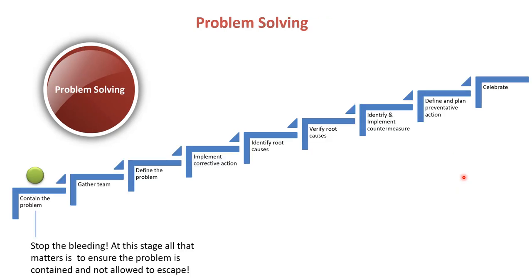So if this has happened, then we know we need to go into problem solving. This is where we start with step one, and that is contain the problem. We've got to stop the bleeding at this stage. All that matters is to ensure the problem is contained and not allowed to escape. So we don't want it to escape any further than it already is. If it has escaped our facility, then we need to contain it in both the locations where we have it in our facility and then at our customer facility or wherever it is in transit. But we need to contain it. That's what it's all about.